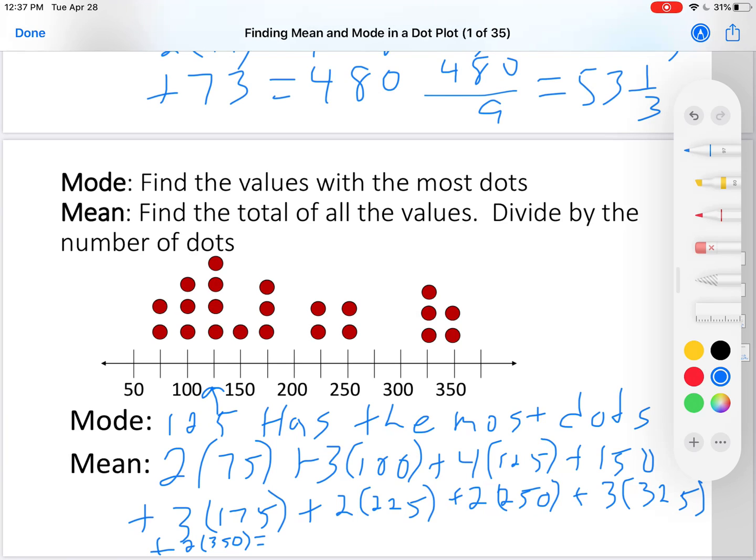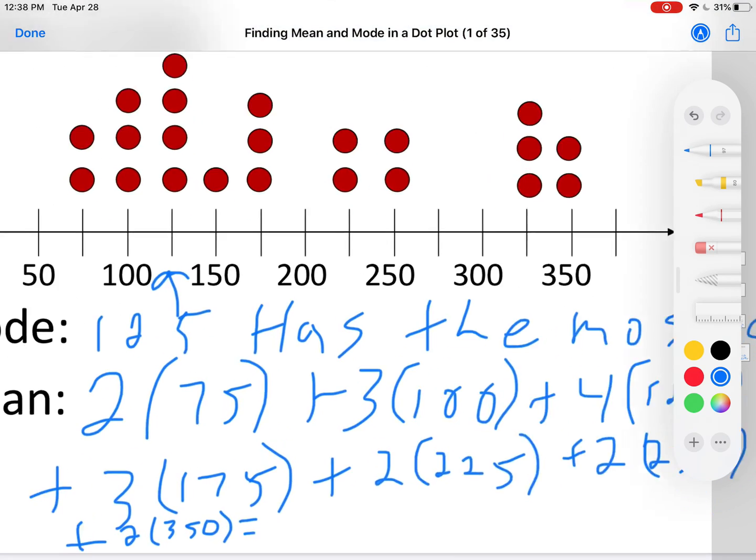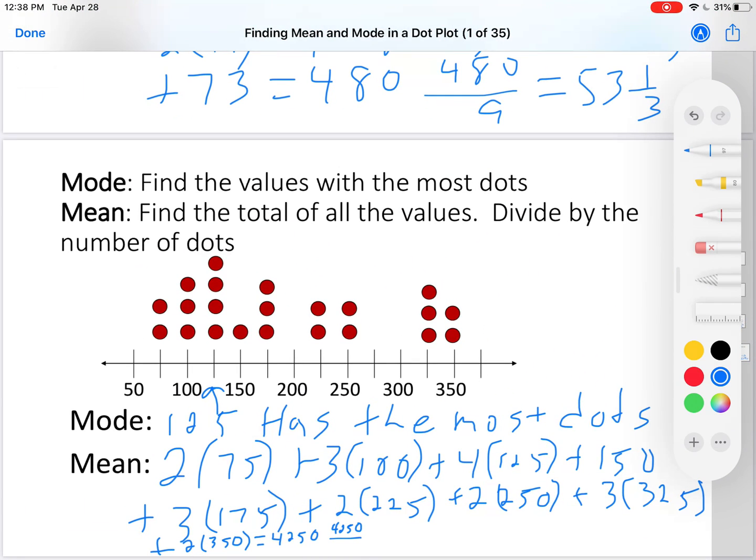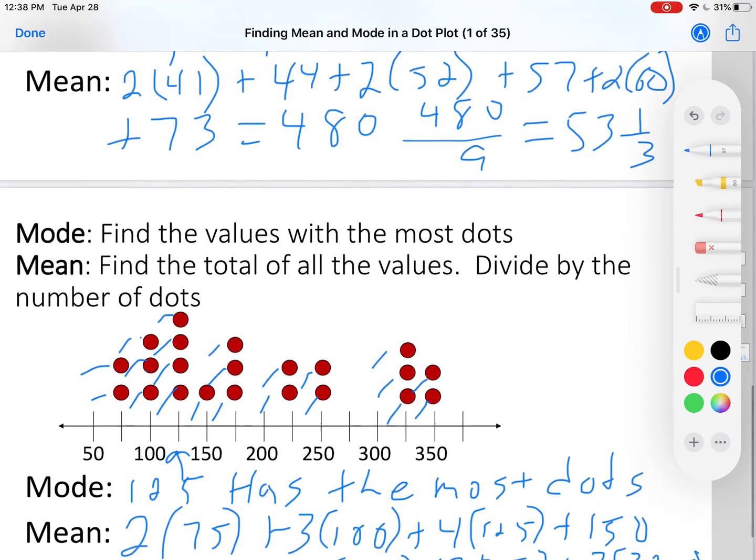Two times 75 plus three times 100 plus four times 125 plus 150 plus three times 175 plus two times 225 plus two times 250 plus three times 325 plus two times 350 is 4250. Now I have to take that 4250 and divide it by however many dots there are. Well, let's count them: one, two, three, four, five, six, seven, eight, nine, ten, eleven, twelve, thirteen, fourteen, fifteen, sixteen, seventeen, eighteen, nineteen, twenty, twenty-one, twenty-two. There are 22 dots.